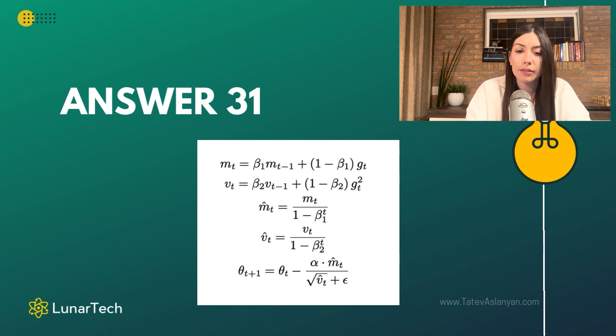Then we are also adjusting the velocity. VT hat is the adjusted version of VT, because we take VT and divide it by 1 minus beta 2 to the power T, using beta 2 as our hyperparameter, as our second bias vector. Then we are using this adjusted running average for the first moment and the adjusted version of the running average of our second order gradient in order to update and adopt our learning rate.